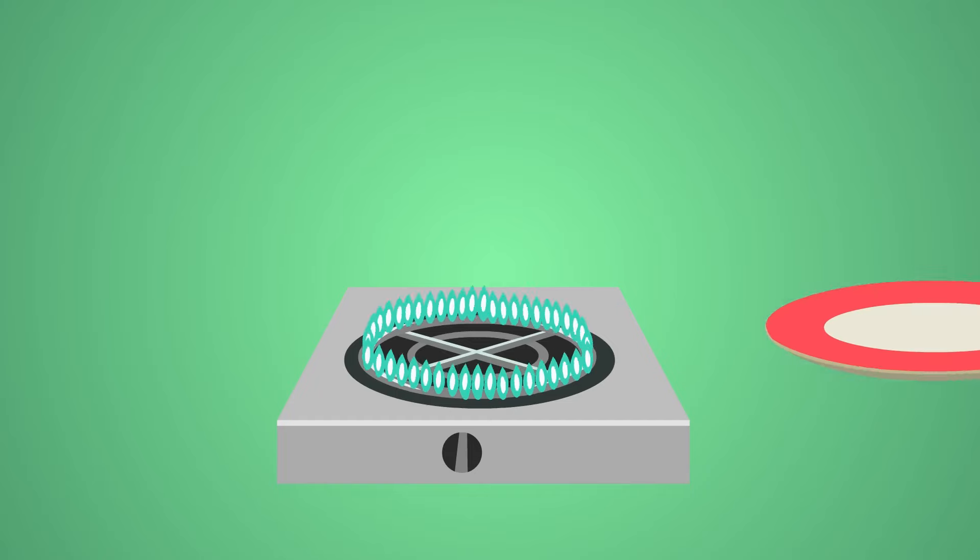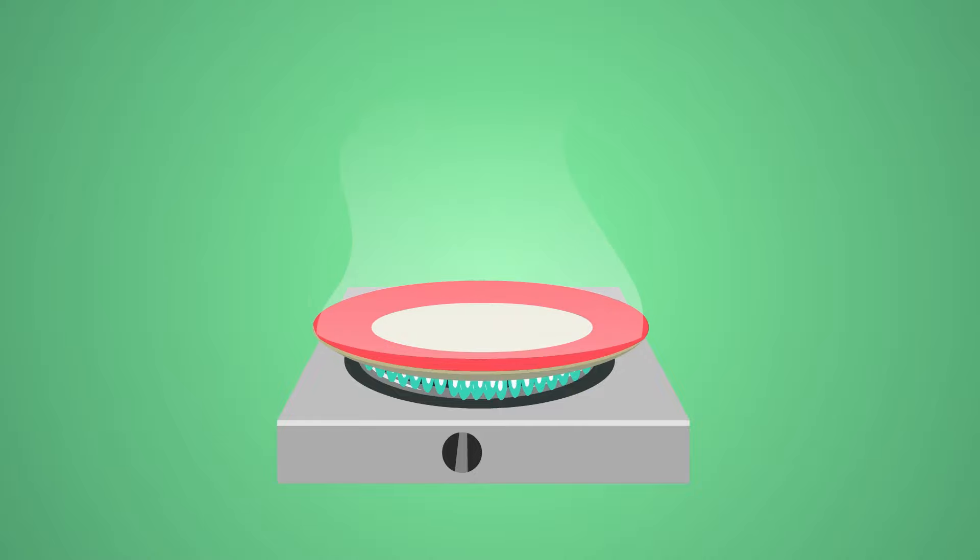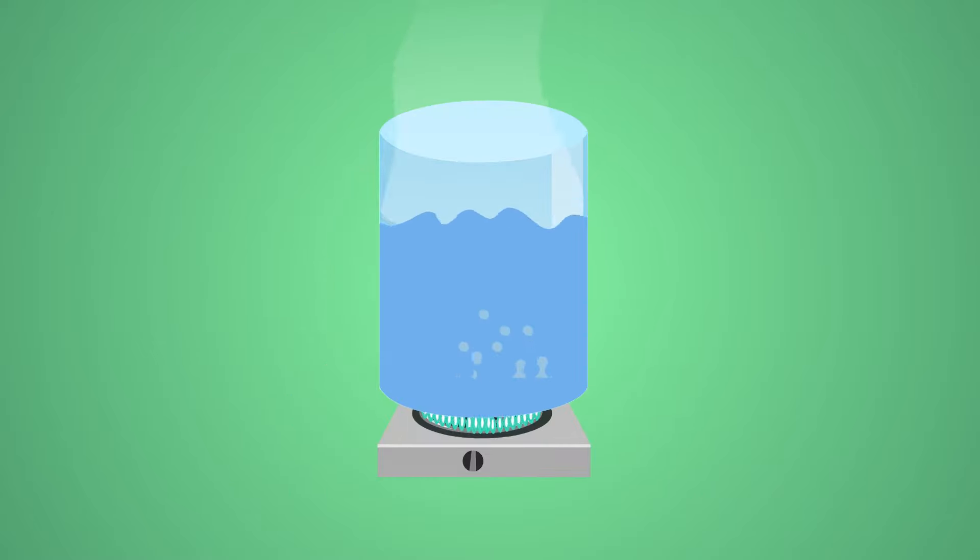You can heat only one side of a steel plate on a cooktop, yet the entire plate will get hot. That's an example of heat transfer due to conduction. All the water inside a container becomes hot when you only apply heat to the bottom of that container, which is a classic example of convection.